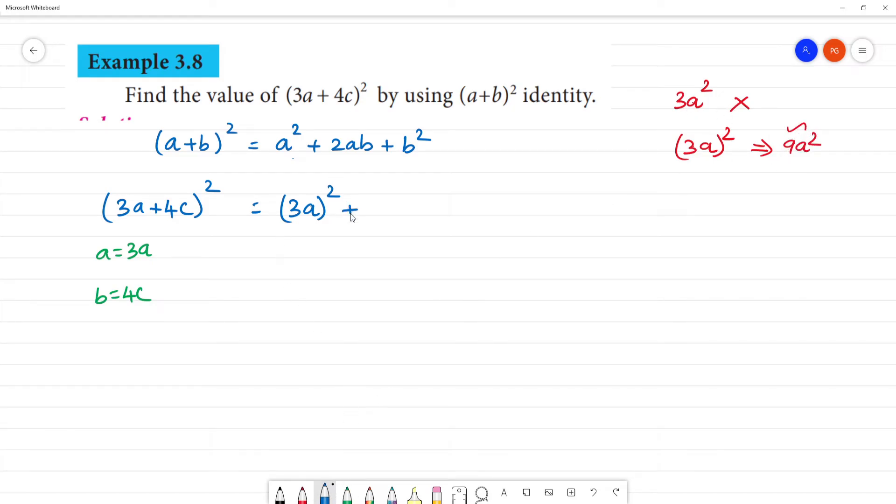Next, plus 2ab where a value is 3a and b value is 4c, plus b² which is (4c)² the whole square.